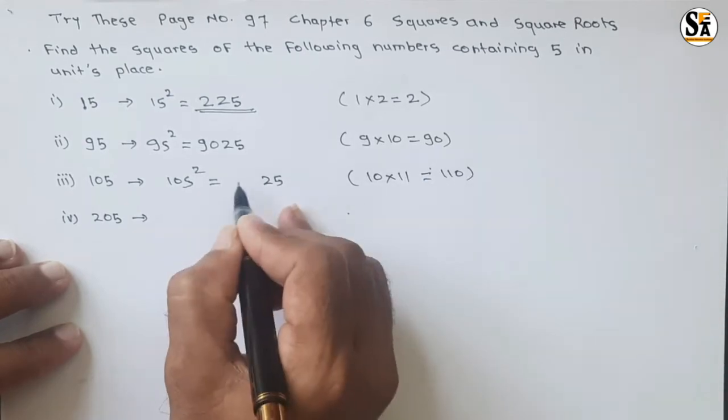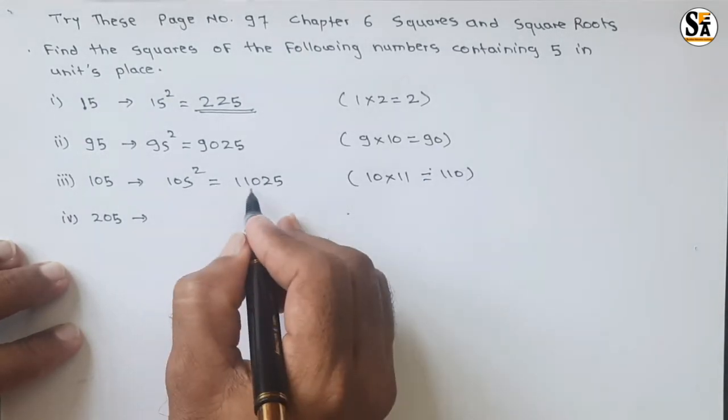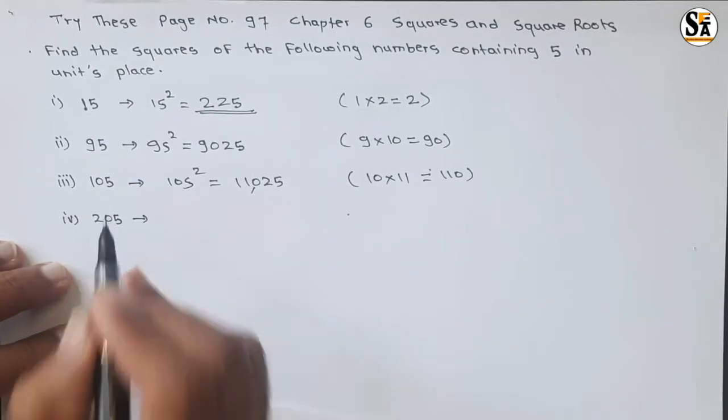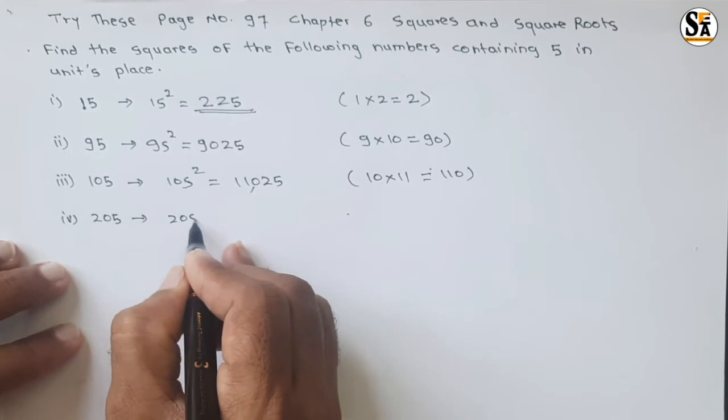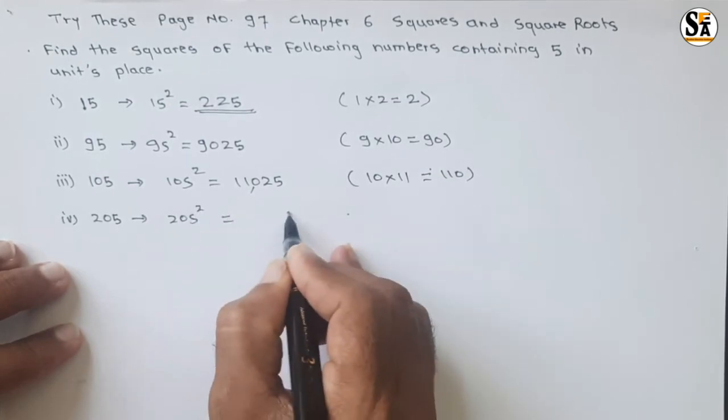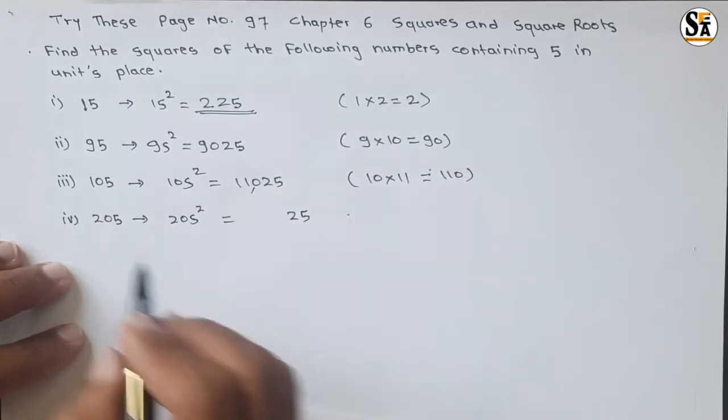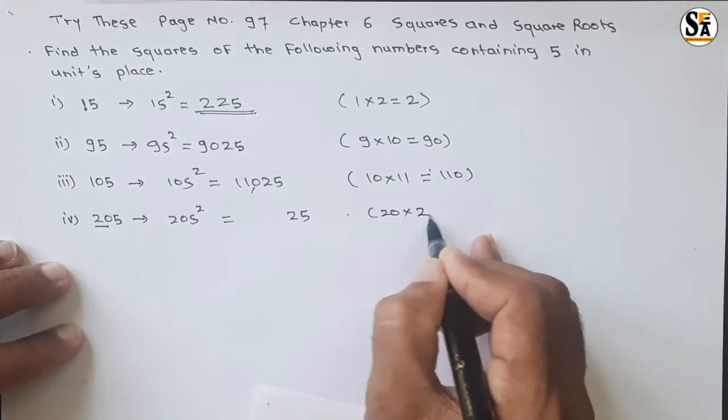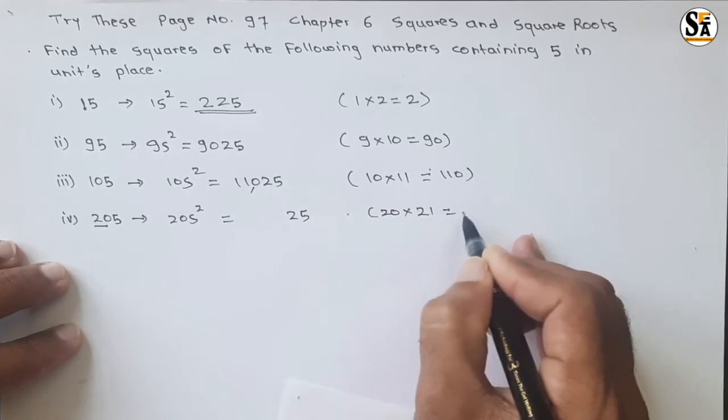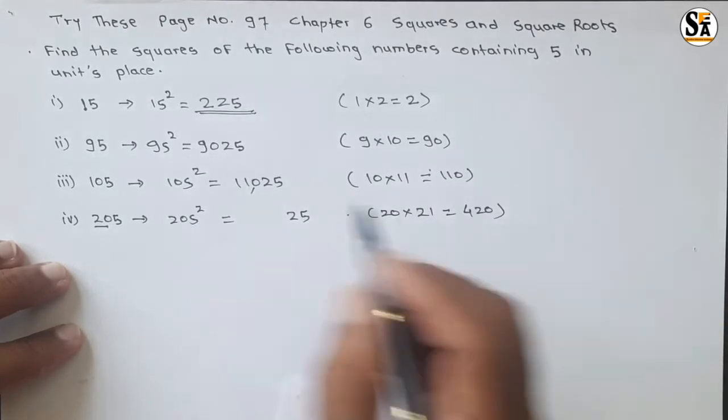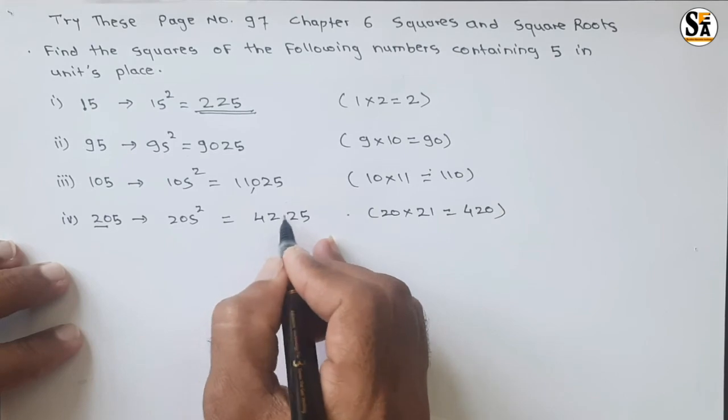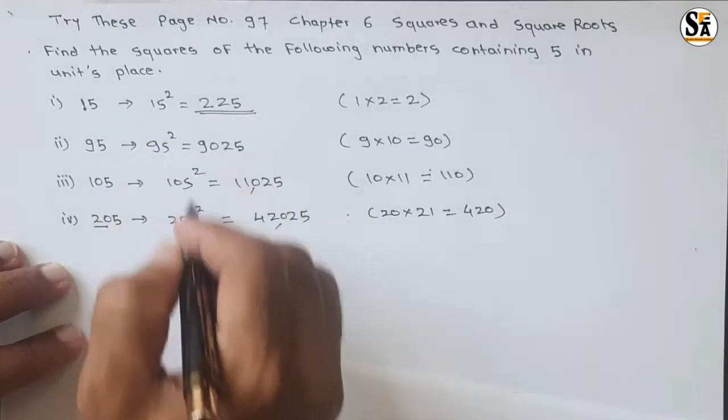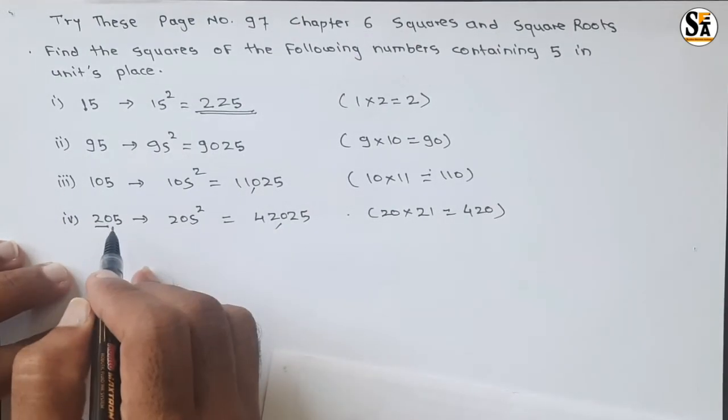For the number 205 squared: write 25 first. The remaining is 20, so multiply 20 with the next immediate number which is 21, and the multiplication is 420. So write 420 here. We will get 42025.